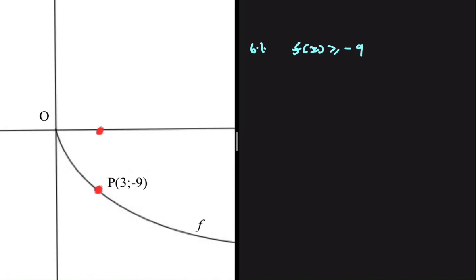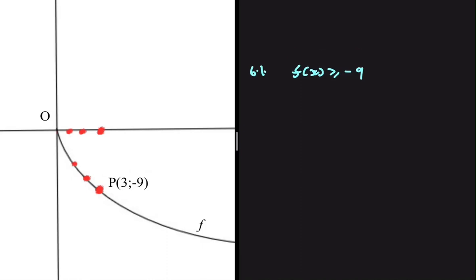Well, if you look at x equals 2, then our graph is greater than minus 9. And then if you look at x equals 1, our graph is still greater than minus 9. If you look at x equals 0, then our corresponding y value is equals to 0. So from x equals 0 to x equals 3, f of x is greater or equals to minus 9.